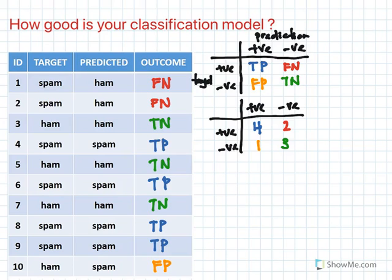Welcome back to my channel. This is the second part on classification models and how to evaluate them. In my previous video, which I'll provide a link for, I discussed the confusion matrix and how you can find your accuracy, and based on that accuracy you can find your misclassification rate or error rate.